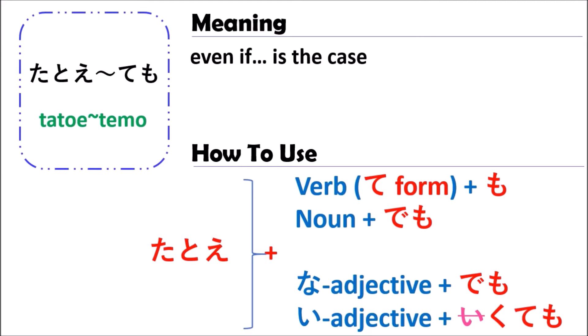But when you use the verb, you should change the verb to the te-form, and after that follow by も. For example, you can say いても, 聞いても, 食べても, something like this.